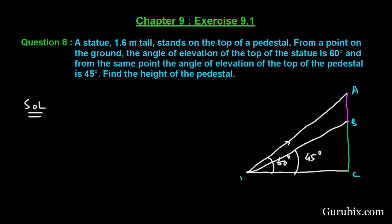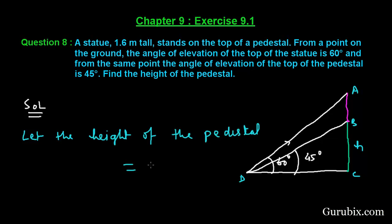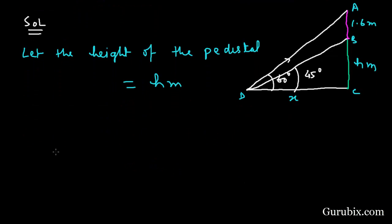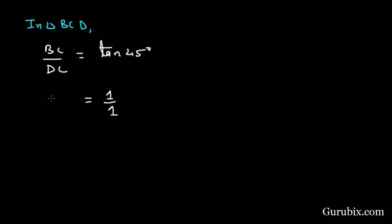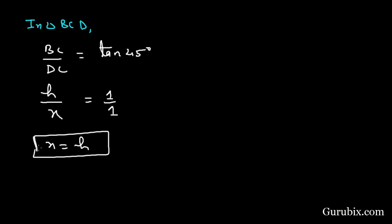Let us label the points: this is point A, point B, point C, and point D. Suppose the height of the pedestal is H meters, the height of the statue is given as 1.6 meters, and the horizontal distance is X. Now, in triangle BCD, the ratio of BC to DC equals tan 45 degrees, which is 1. BC is H and DC is X, therefore X equals H. This is equation number 1.